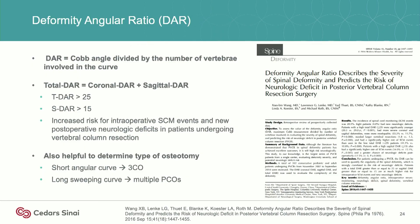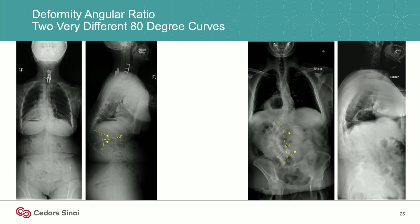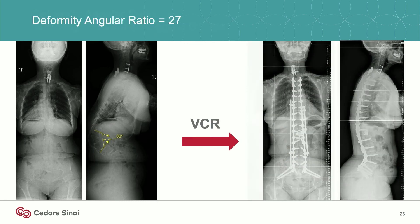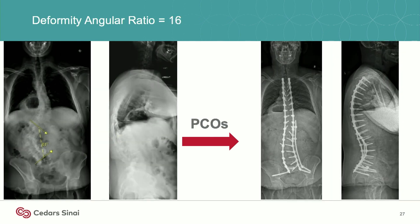For example, two roughly 80-degree curves — but very different. One's in the sagittal plane and completely fused. The other's in the coronal plane with multiple open disc spaces over many more levels. In the first case, the deformity angular ratio was 27 and she required a VCR for correction. In the second case, it was 16, and multiple posterior column osteotomies were able to achieve very nice correction.